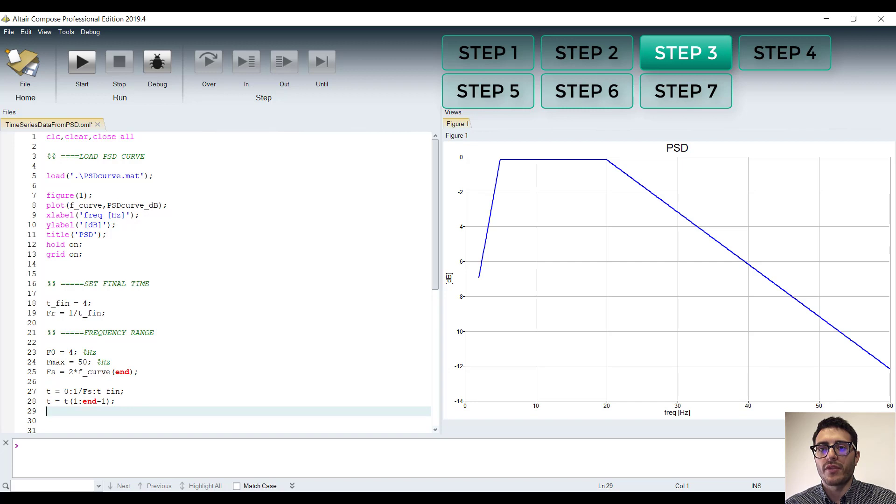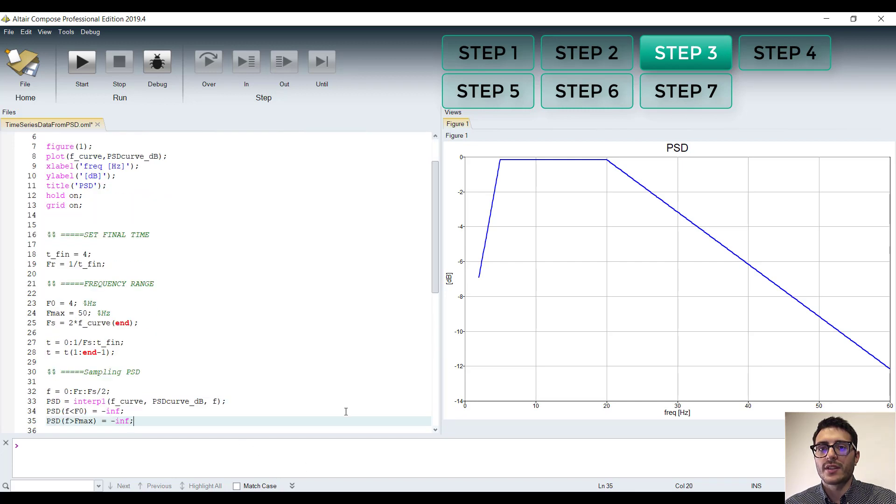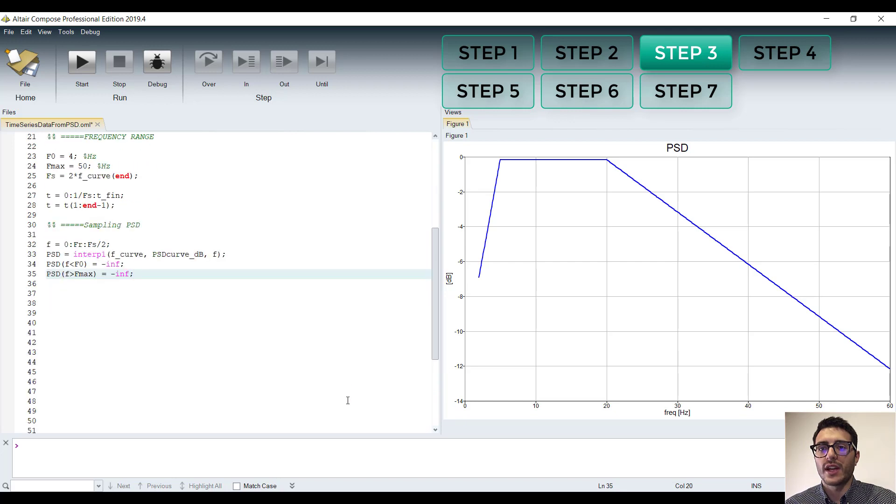At this point, we can perform the sampling of the PSD curve. So we build the frequency vector, and we leverage the built-in interp1 function.